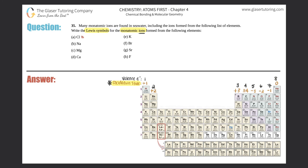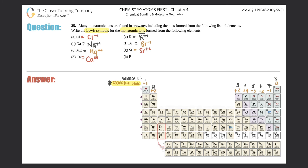So chlorine's monatomic ion: chlorine is over here in group 17, so chlorine would want to gain one electron, making it Cl minus one. Sodium is over here in group one, so that's Na plus one. Magnesium is in group two, so magnesium would want to lose two electrons — that's a plus two. Calcium is right below it, also a group two atom, so it would also want to lose two electrons. Potassium is group one, so potassium would always want to lose one electron. Bromine is group 17, so bromine would always want to gain one electron, making it a negative one. Strontium is group two, so strontium is a plus two — it would lose two electrons. And last but not least, we have fluorine, which is a minus one.